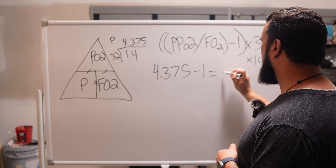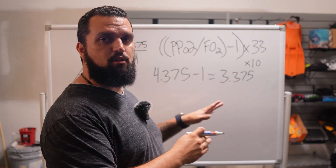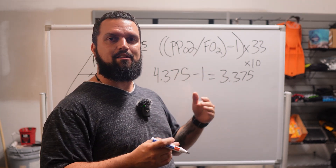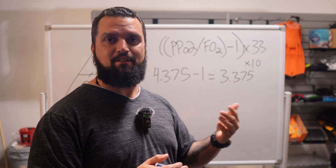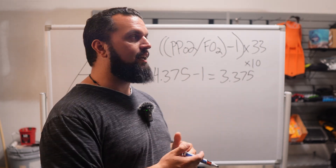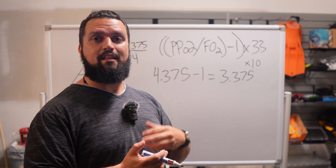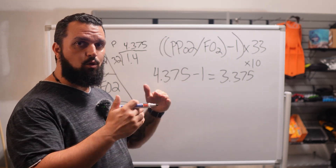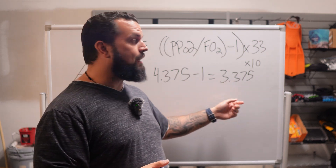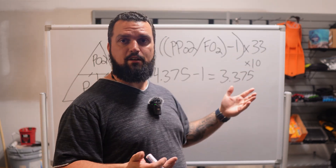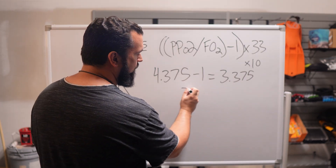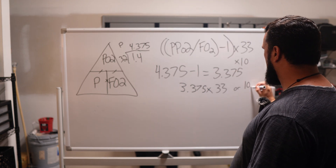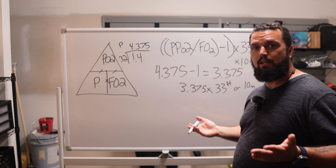4.375 minus 1 equals 3.375. This minus-1 step and the upcoming multiplication are what convert atmospheric pressure into an actual depth. As we descend, pressure increases: at 33 feet or 10 meters it's 2 atmospheres, at 66 feet or 20 meters it's 3 atmospheres. So we normalize by subtracting 1, then multiply by 33 feet or 10 meters per atmosphere.